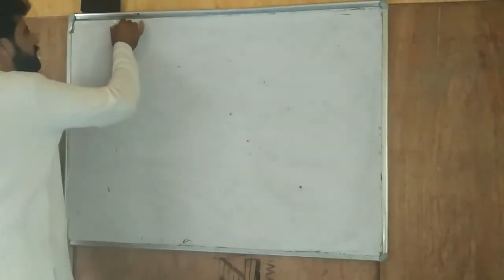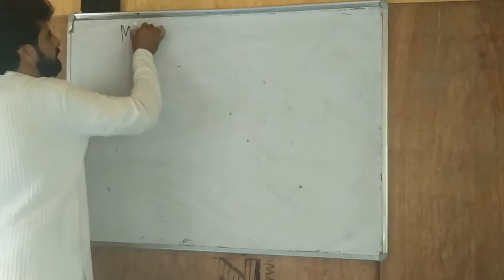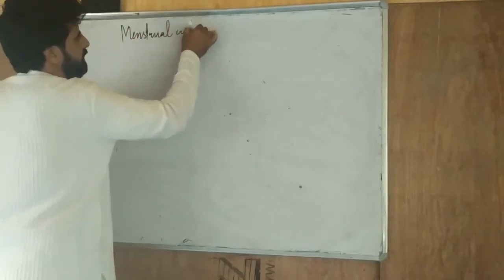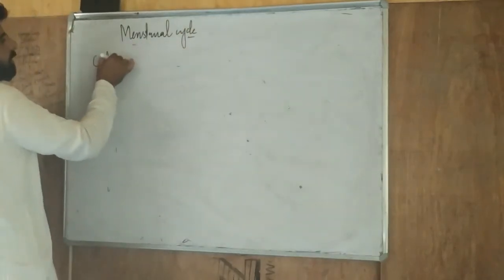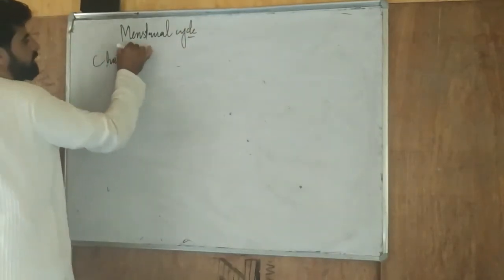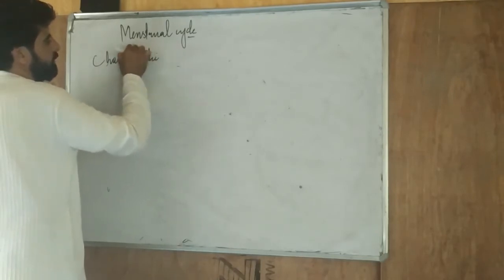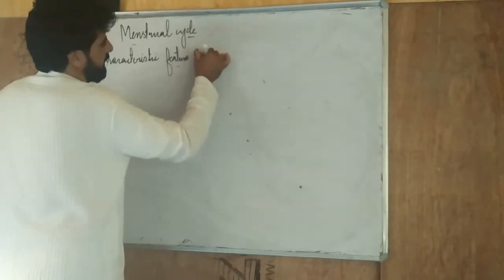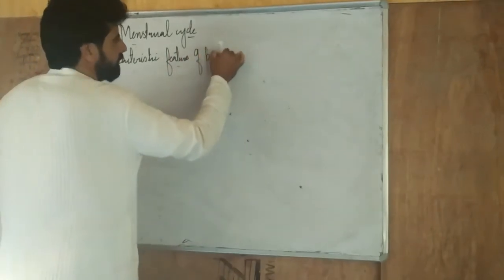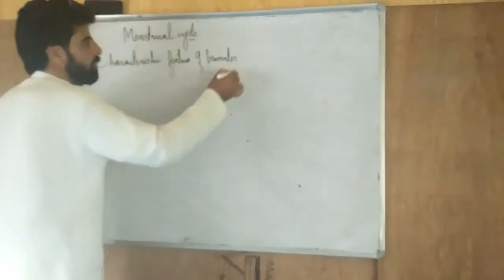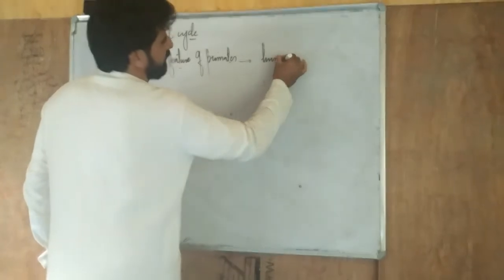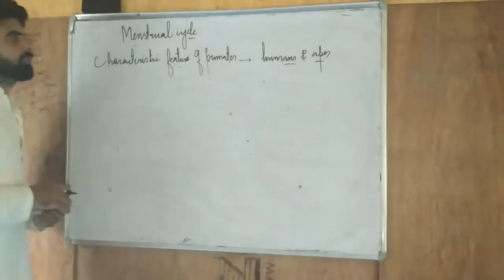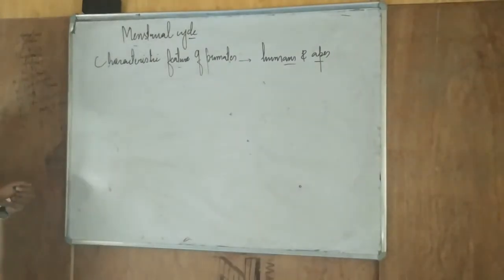Today we are discussing the menstrual cycle. The menstrual cycle is a characteristic feature of primates, which includes humans and apes. These are the organisms that show this cycle, known as the menstrual cycle.